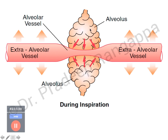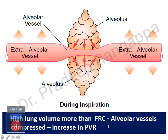When alveoli are overdistended, alveolar vessels get compressed. During inspiration this effect is more pronounced because inspiratory pressure — such as added pressure support — increases transpulmonary pressure further. Transpulmonary pressure is greater during inspiration than expiration. During inspiration, increased transpulmonary pressure leads to greater alveolar distension and higher pulmonary vascular resistance. High lung volume above FRC causes alveolar vessel compression and increased PVR — this is the crux of heart-lung interactions.